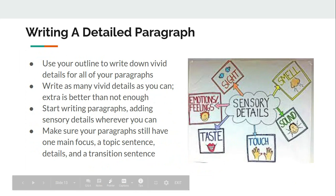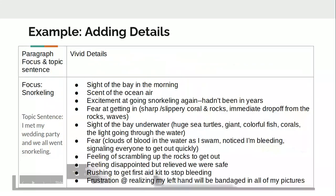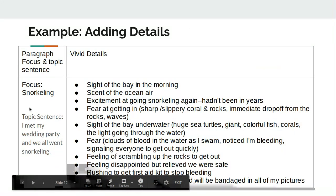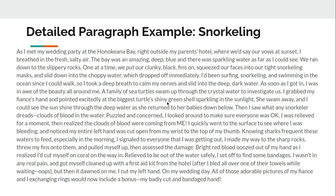Now that I have my topic sentence and my vivid details, I'm going to start writing those paragraphs, adding those sensory details wherever I can. Make sure my paragraphs still have one main focus — a topic sentence and supporting details. My focus here is on snorkeling, so all of these vivid details have to do with that snorkeling experience. How it looked, how it smelled, how I felt at different points — it all always points back to and supports the topic sentence about snorkeling. You want to write a detailed and vivid paragraph, but make sure all those details point back to that particular main idea.